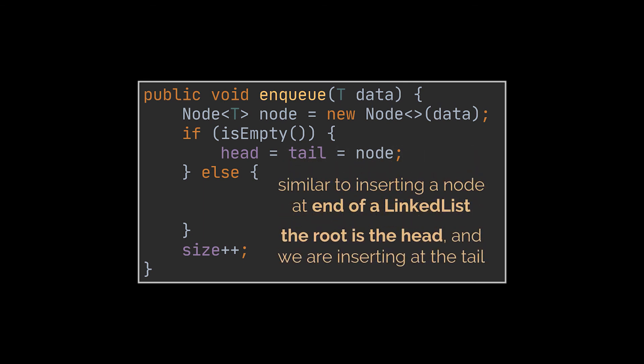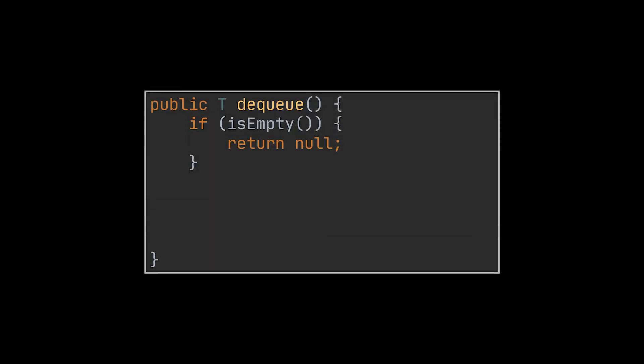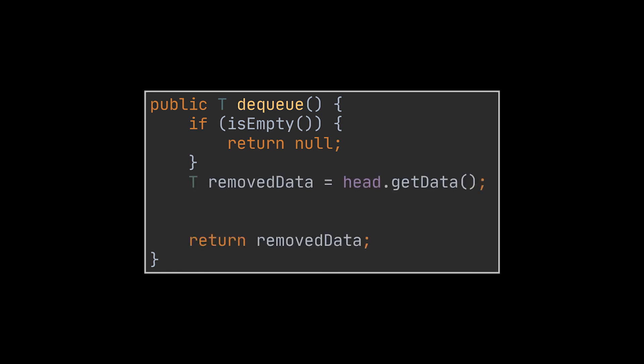If the queue is empty, the newly created node is both the head and the tail, written as head equals tail equals node. If the queue is not empty, we insert like adding to a linked list — we set the next node of the current tail to the newly created node, then update the tail to point to that new node. Note that unlike a standard linked list where we insert at the head, here we always insert at the tail.